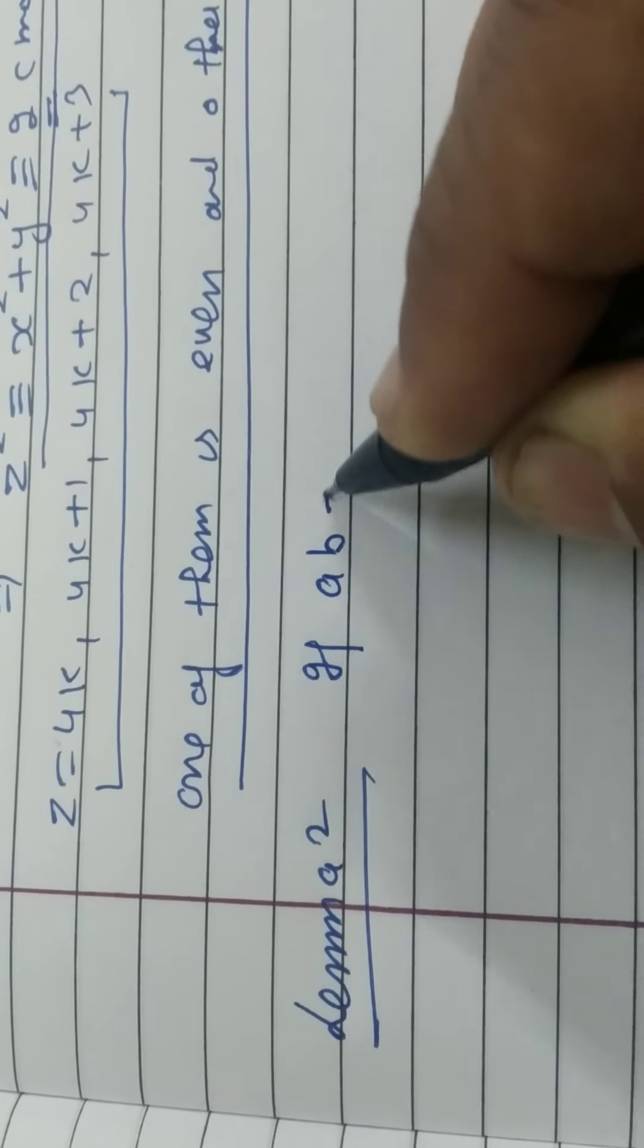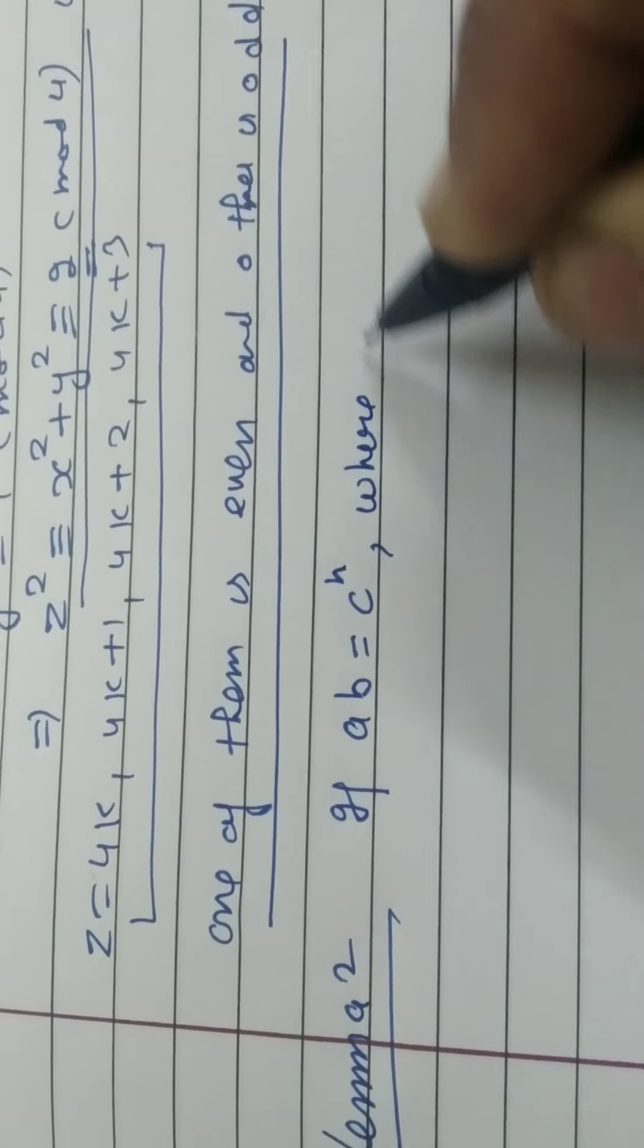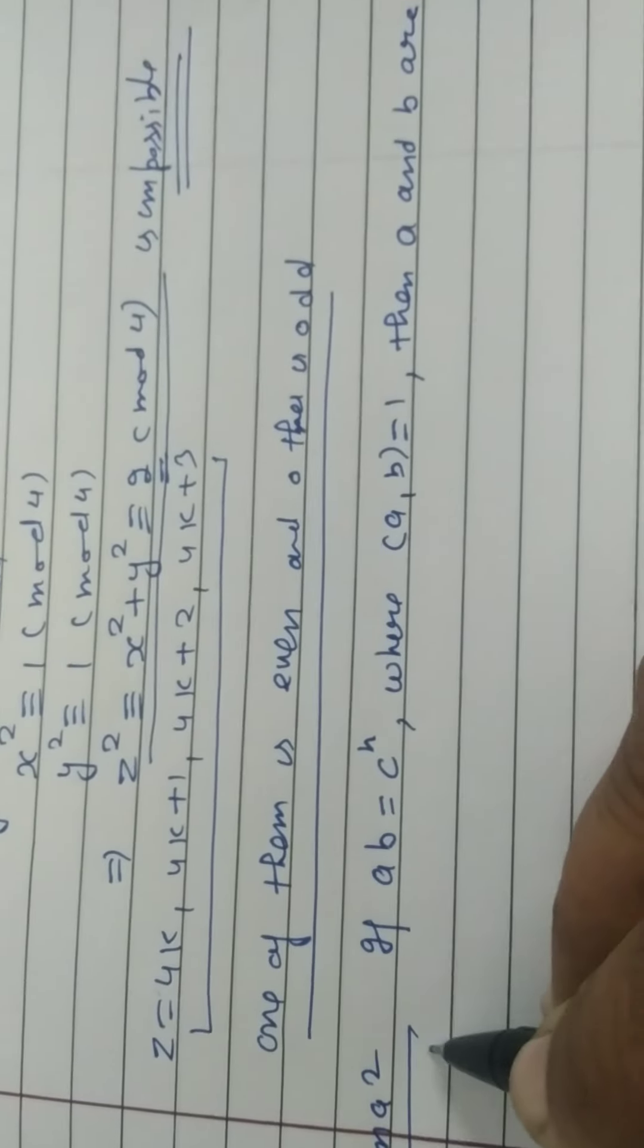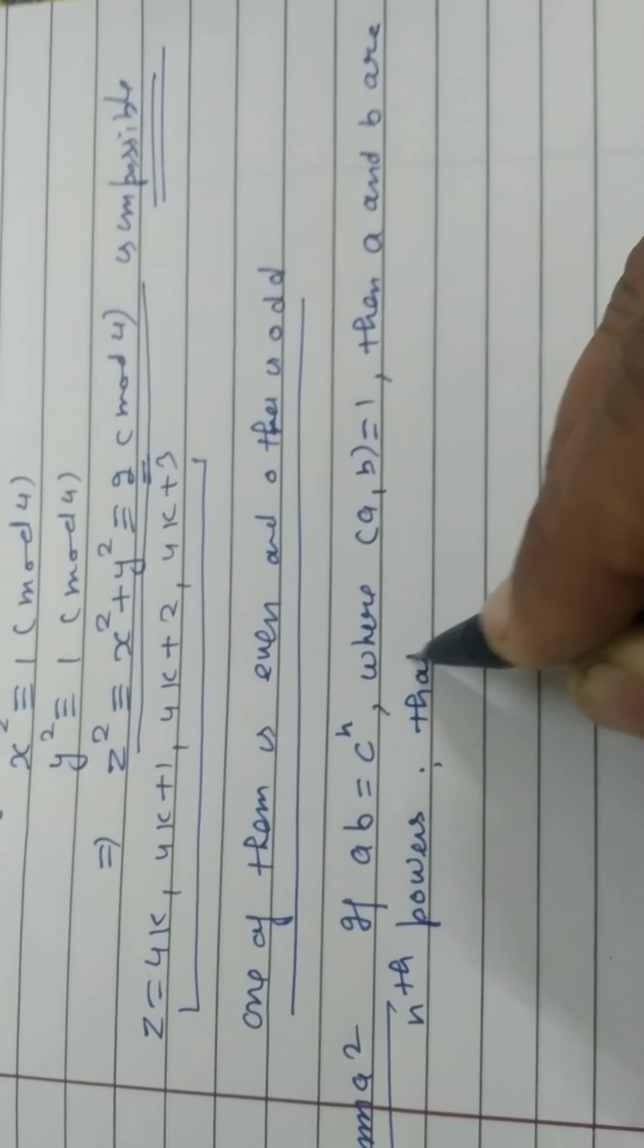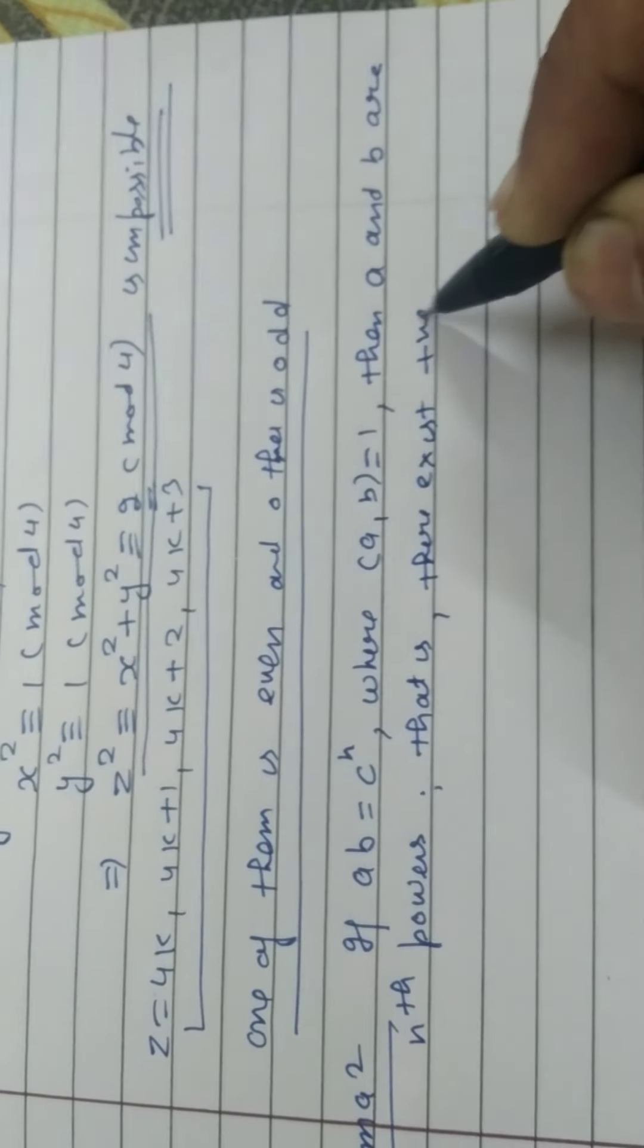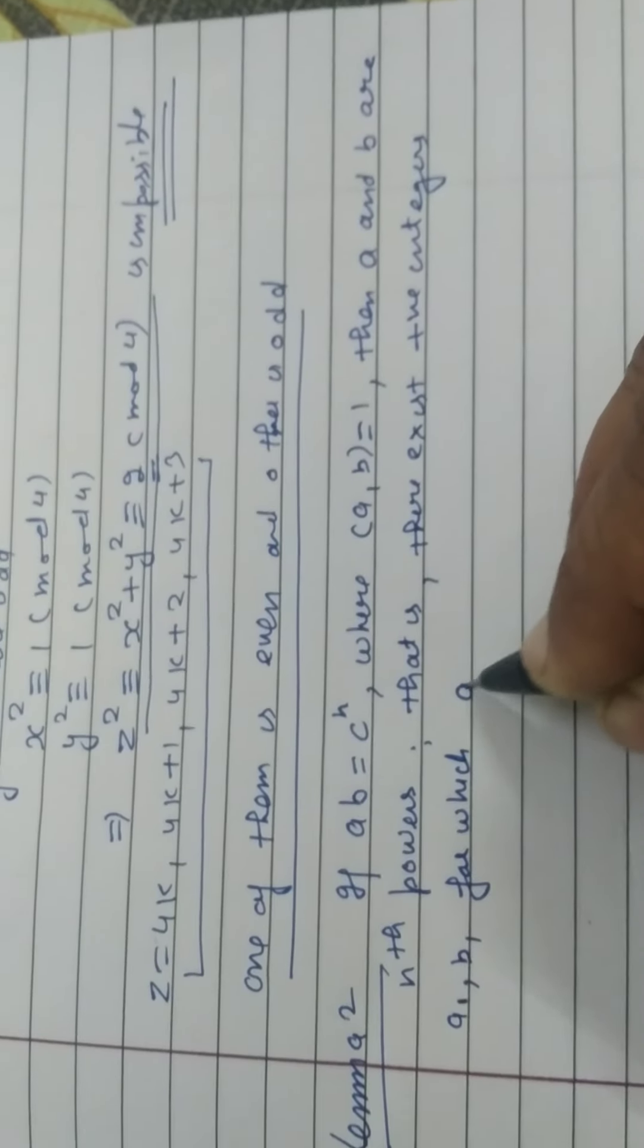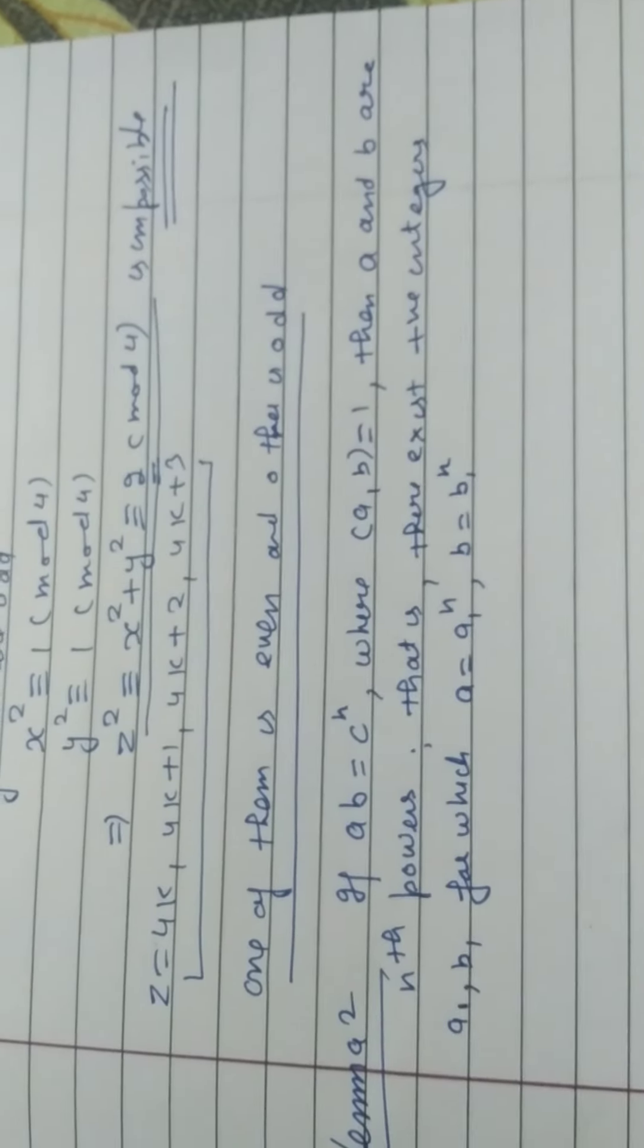If AB equal to C raised to the power N, where GCD of AB is equal to 1, then A and B are the Nth power. That is, there exists positive integers A1, B1, for which A is equal to A1 raised to the power N and B is equal to B1 raised to the power N.